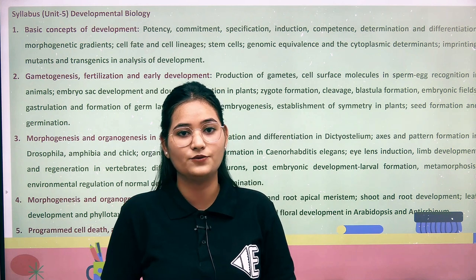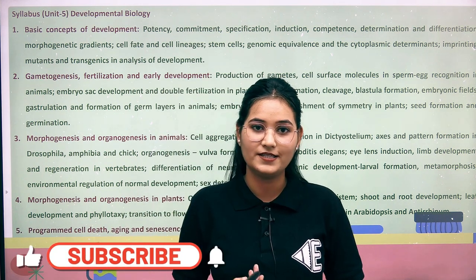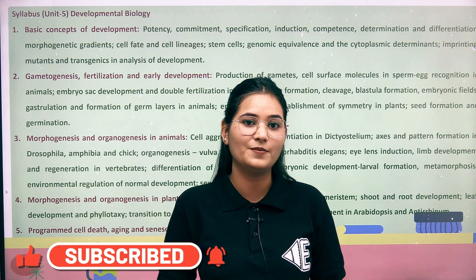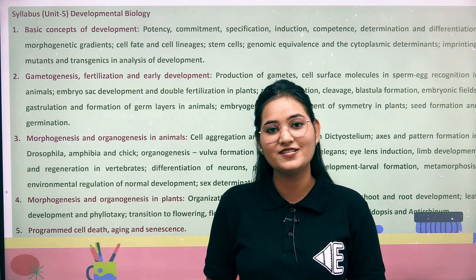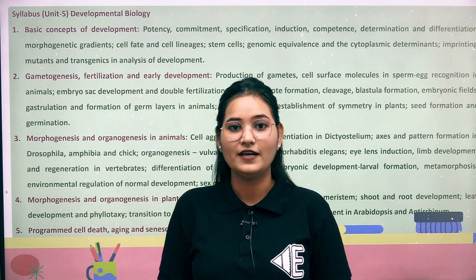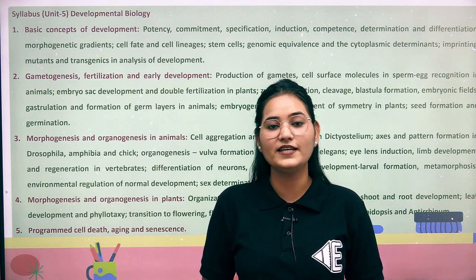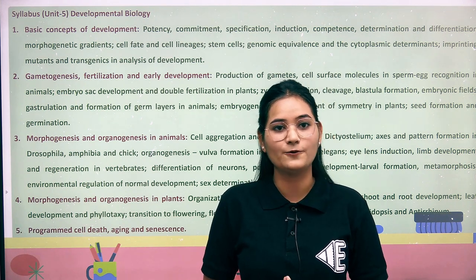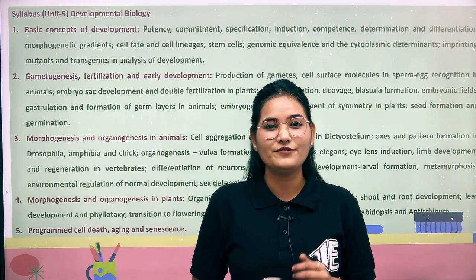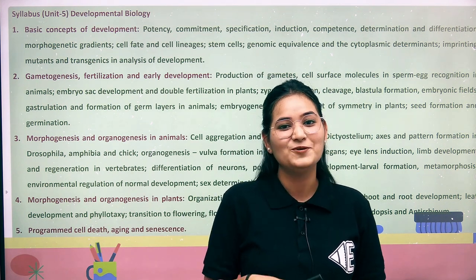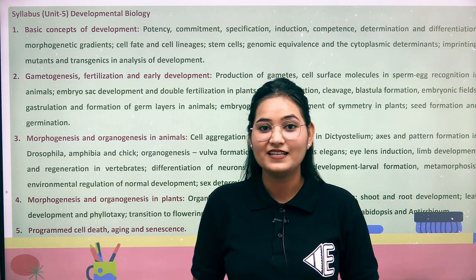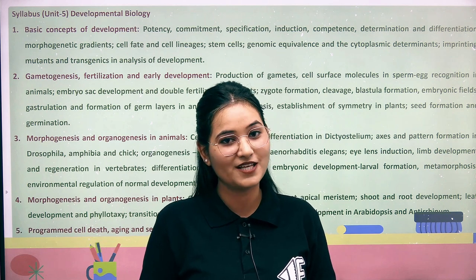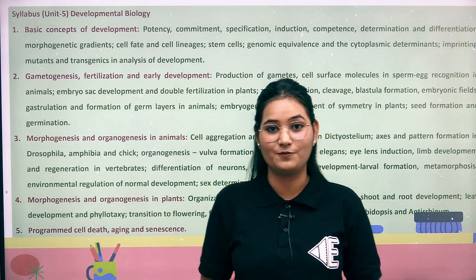The other units are stream-specific. For example, if you have done Botany MSc, you will study Plant Physiology, and if you have done Zoology MSc, you will study Animal Physiology. Developmental Biology falls in the other units category and is studied under special conditions. Unit 5 has 5 sections, and within each section there are 6 to 7 topics, making a total of around 40 to 45 topics.